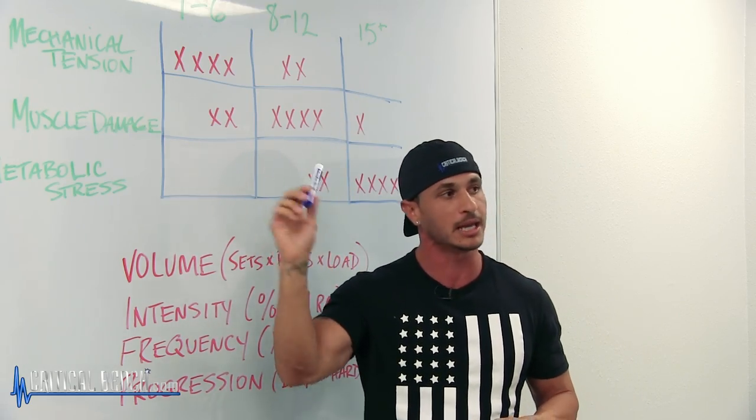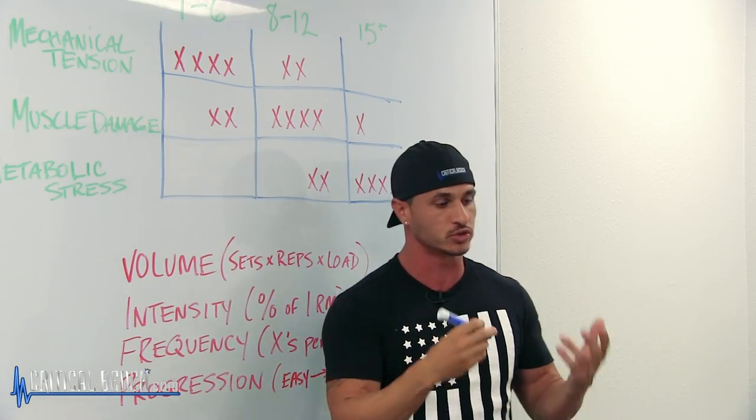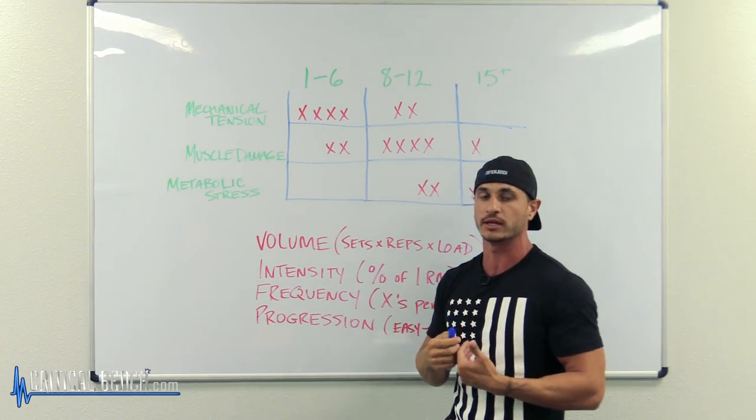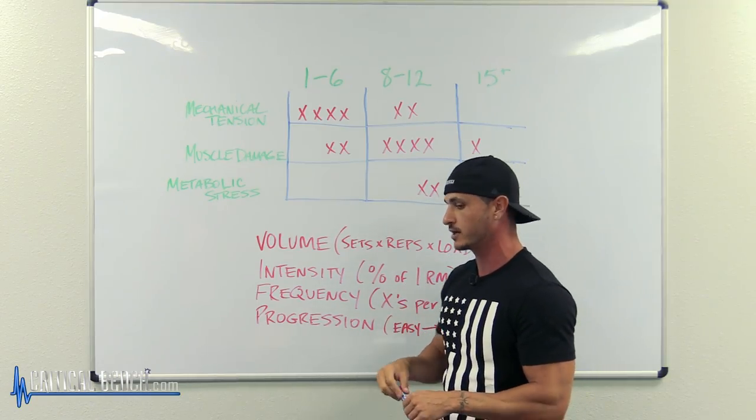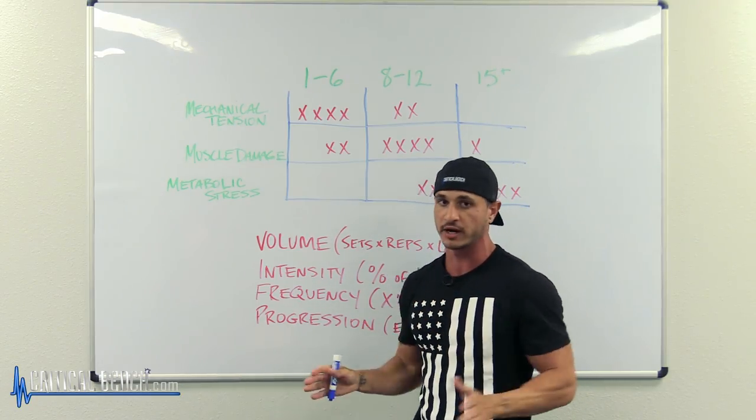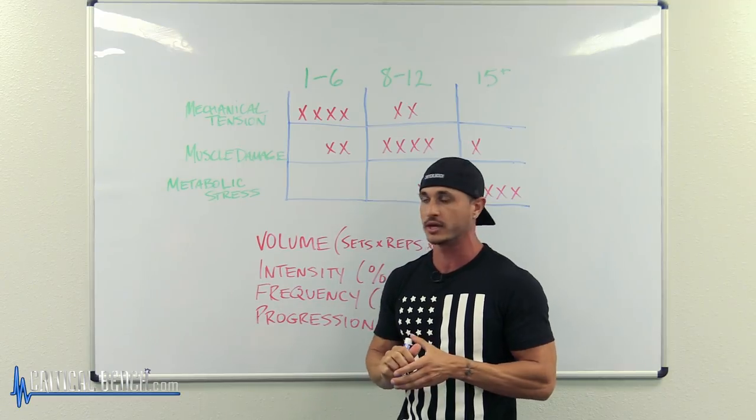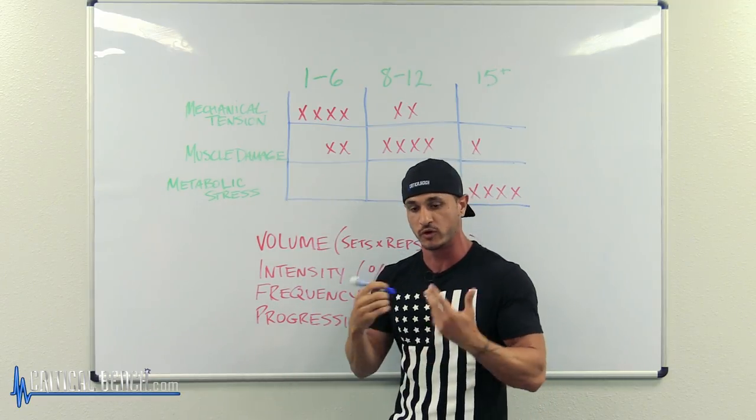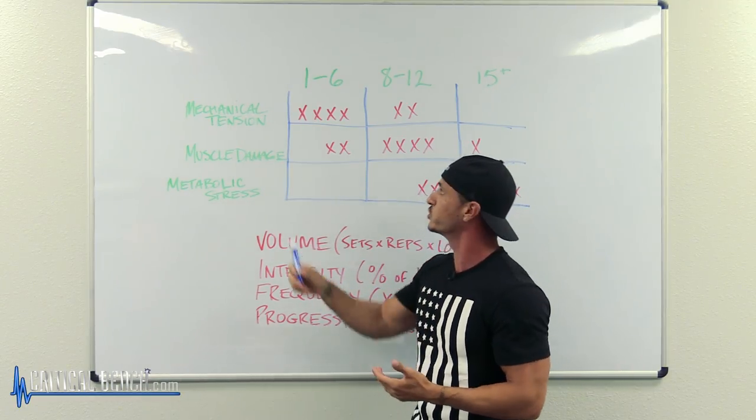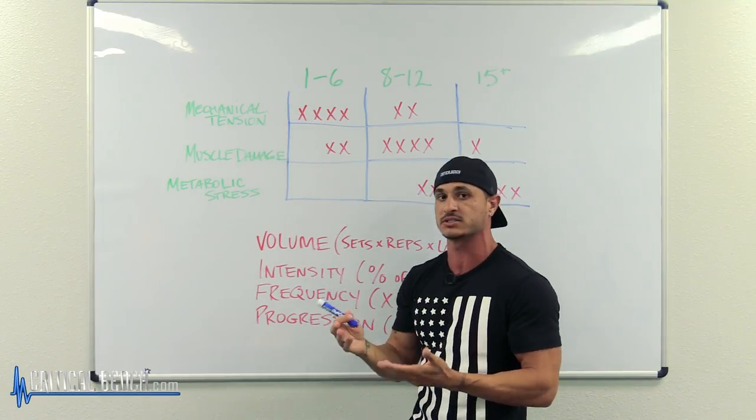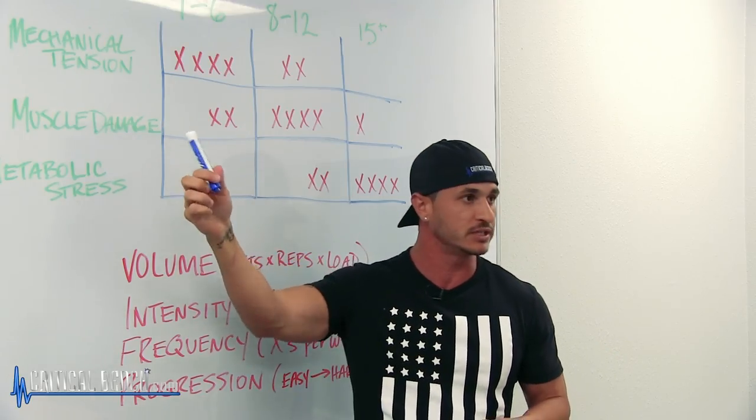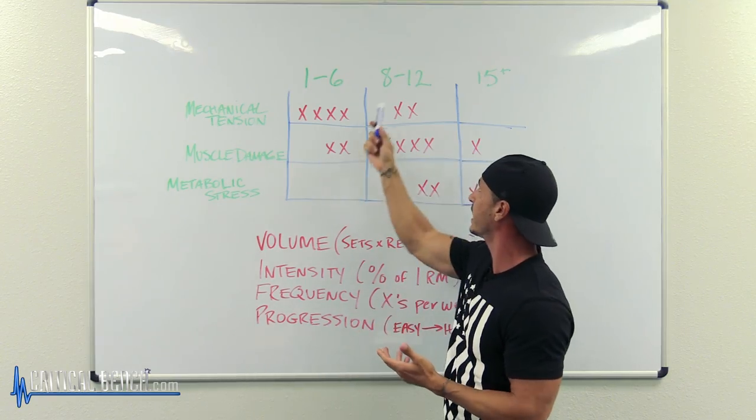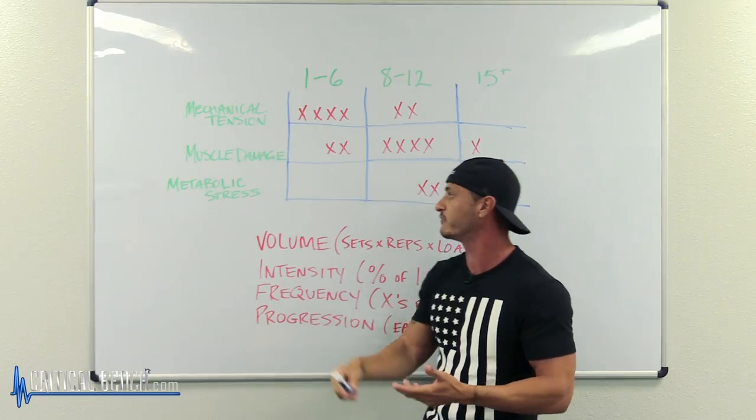Now let's talk about how you can implement each one of these into your training. The way I like to do it is through daily undulating periodization. How does that work? Very simple. You're gonna have one day where you focus on strength, so you train maybe in the 3 to 6 rep range.